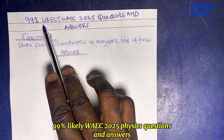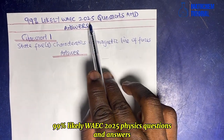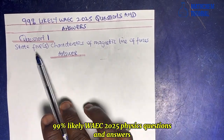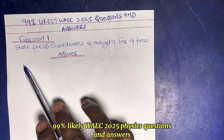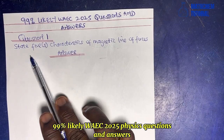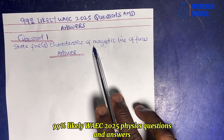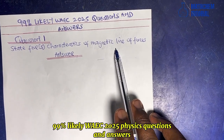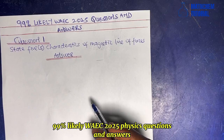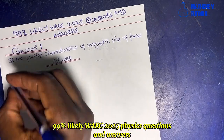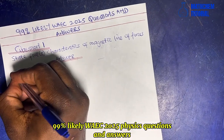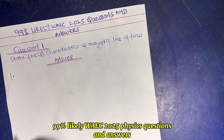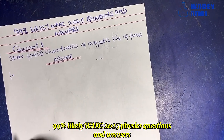This is a 99% likely Y25 questions and answer session. Question one says: state five characteristics of magnetic lines of force. The first answer is that they never intersect each other.